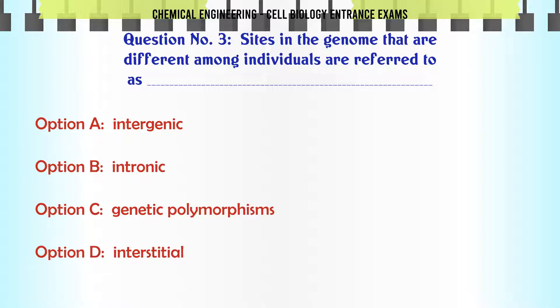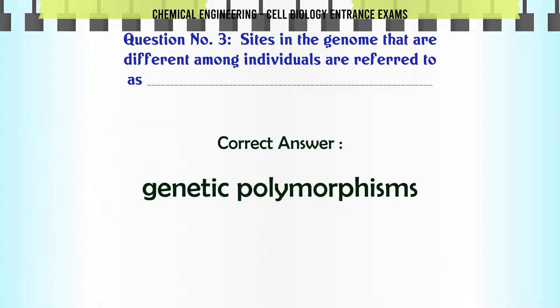Sites in the genome that are different among individuals are referred to as? A. Intergenic. B. Intronic. C. Genetic polymorphisms. D. Interstitial. The correct answer is Genetic polymorphisms.